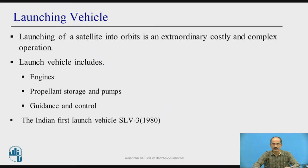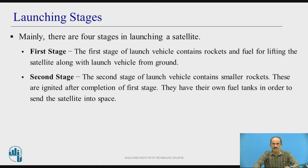Launching of a satellite into orbit is an extraordinary, costly, and complex operation. A launch vehicle includes engines, propellant storage and pumps, and guidance and control. The first Indian launch vehicle is SLV-3, which was launched in the year 1980. We will first understand what the launching process is before looking at the stages involved.